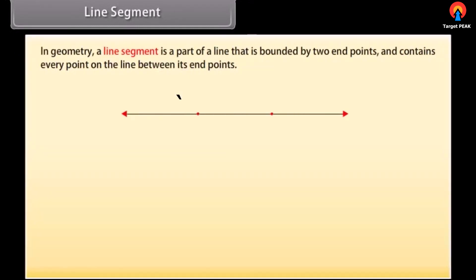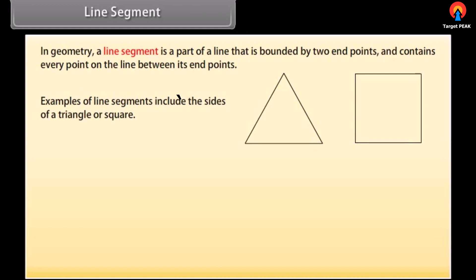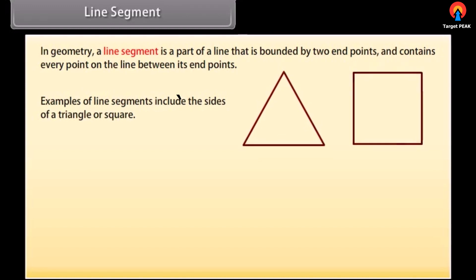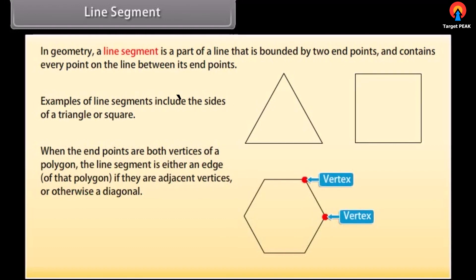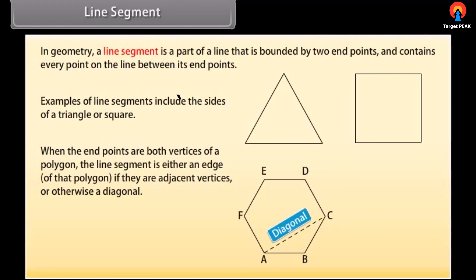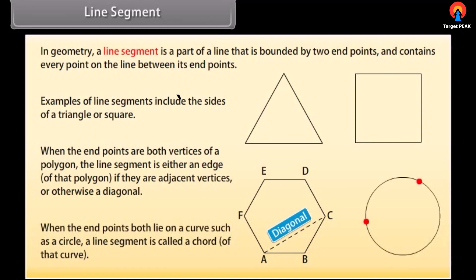In geometry, a line segment is a part of a line that is bounded by two end points and contains every point on the line between its end points. Examples of line segments include the sides of a triangle or a square. More generally, when the end points are both vertices of a polygon, the line segment is either an edge of that polygon if they are adjacent vertices, or otherwise a diagonal. When the end points both lie on a curve such as a circle, a line segment is called a chord of that curve.